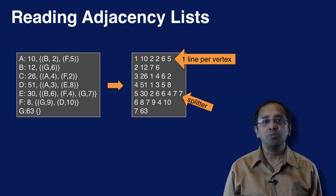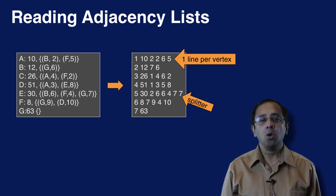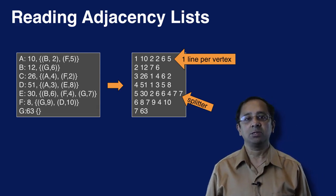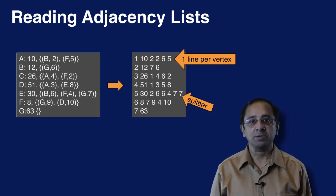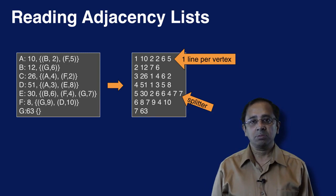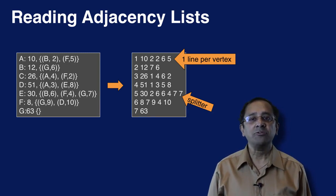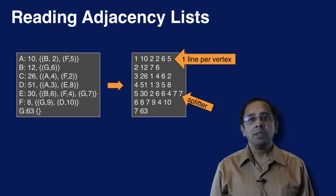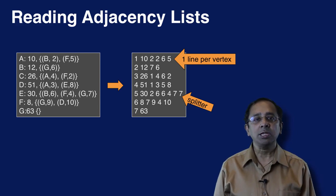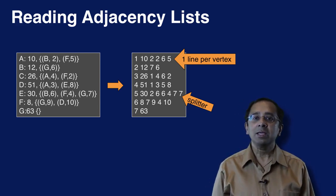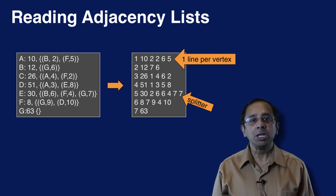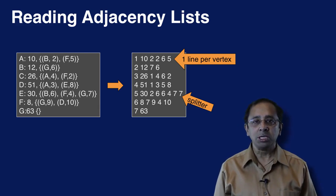So what do we need to specify to parse this for Giraph? One, the graph is a text object and not, let's say, a database object. Two, it is a vertex-based representation — each line is a vertex. The splitter here is a space. The ID of the node is the first value for each line. The value is the second token. The next pair of items define an edge with the target and the weight respectively. And lastly, there is a list of these pairs till the end of the line. Therefore, each line would typically lead to the creation of both nodes and a set of edges.